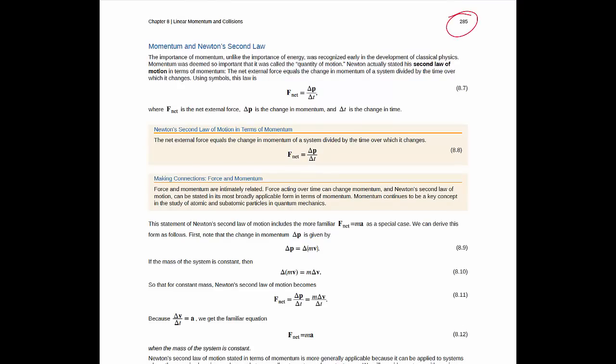Page 285 discusses momentum and Newton's second law. This is important to pay attention to because it will bring us to the idea of impulse, which is the main thrust of this particular unit. Here you have how Isaac Newton actually formulated his second law, not as F equals MA, but in fact in terms of momentum.